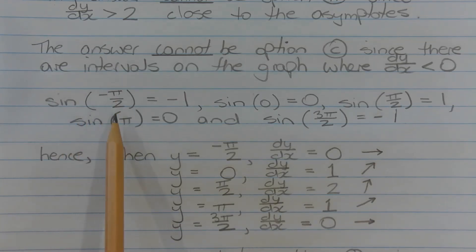Now sine of negative pi over 2 is equal to negative 1, sine of 0 equals 0, sine of pi over 2 equals 1, sine of pi equals 0, and sine of 3 pi over 2 is equal to negative 1.